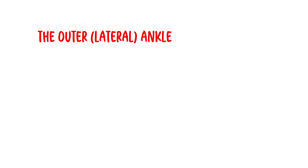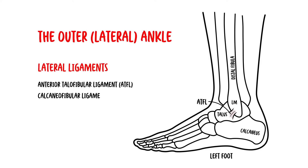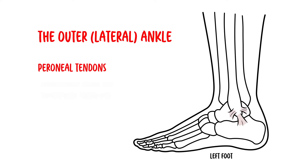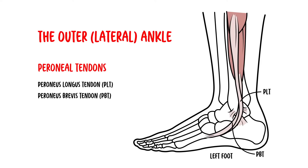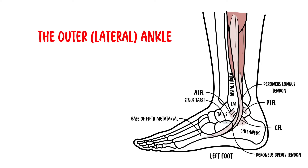The outer ankle or lateral ankle has many important structures. These include the distal fibula which forms the lateral malleolus, and lateral ligaments that help resist the foot moving inwards — so inversion. These lateral ligaments are the anterior talofibular ligament, calcaneofibular ligament, and the posterior talofibular ligament. Also important are the peroneal tendons, which wrap under the lateral malleolus, the sinus tarsi, and the base of the 5th metatarsal.